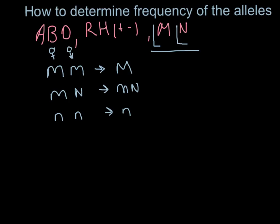these two proteins, these two alleles are co-dominant. So that means they can be expressed simultaneously and no one is dominant over another one.